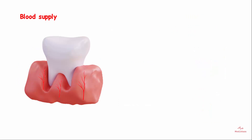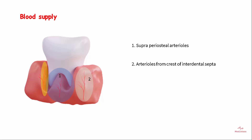The three sources of blood supply to the gingiva are: the supraperiosteal arterioles along the facial and the lingual surfaces of the alveolar bone, arterioles from the crest of the interdental septa, and blood vessels of the periodontal ligament.